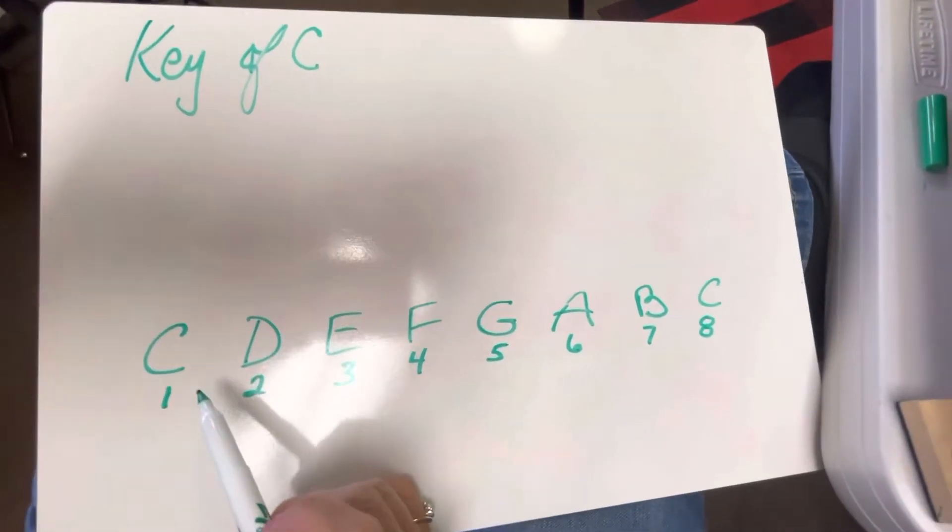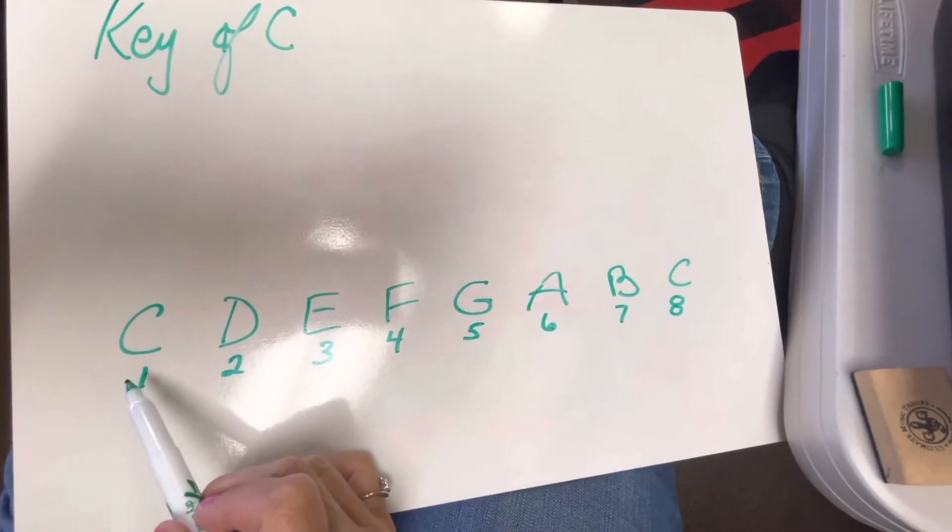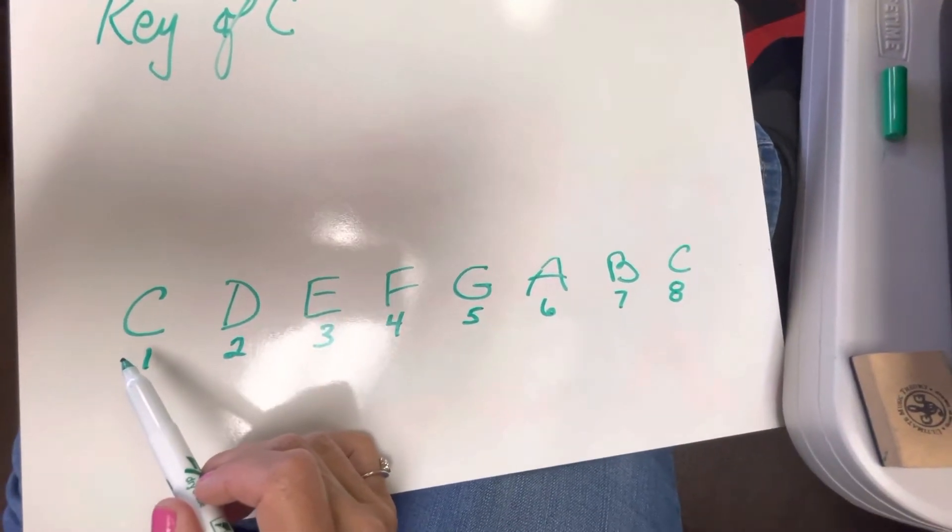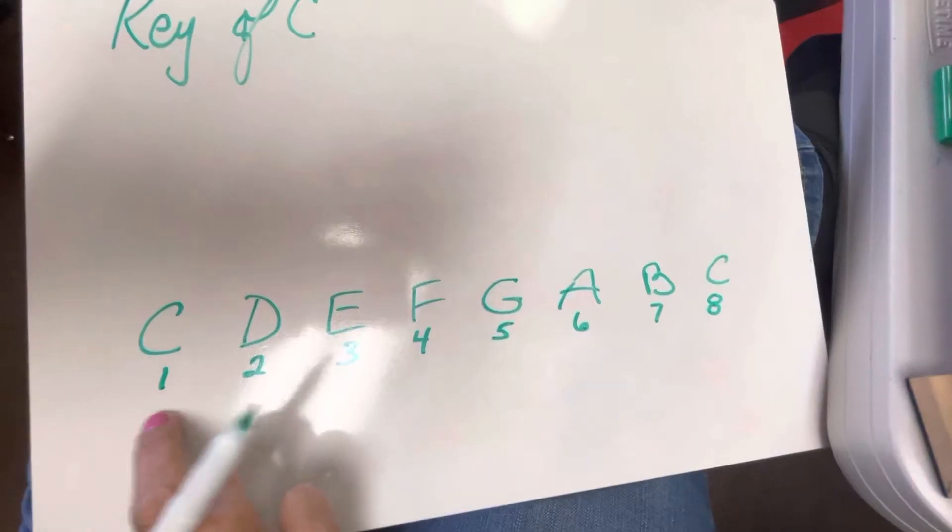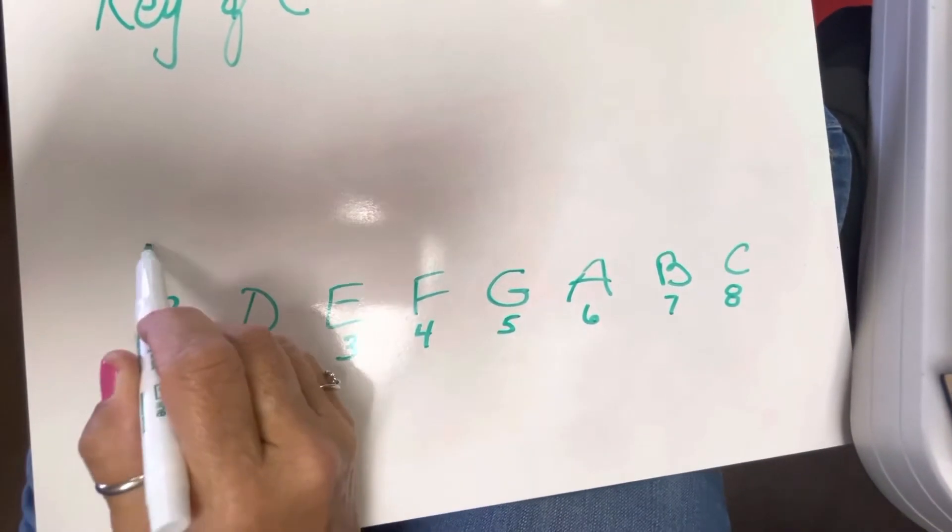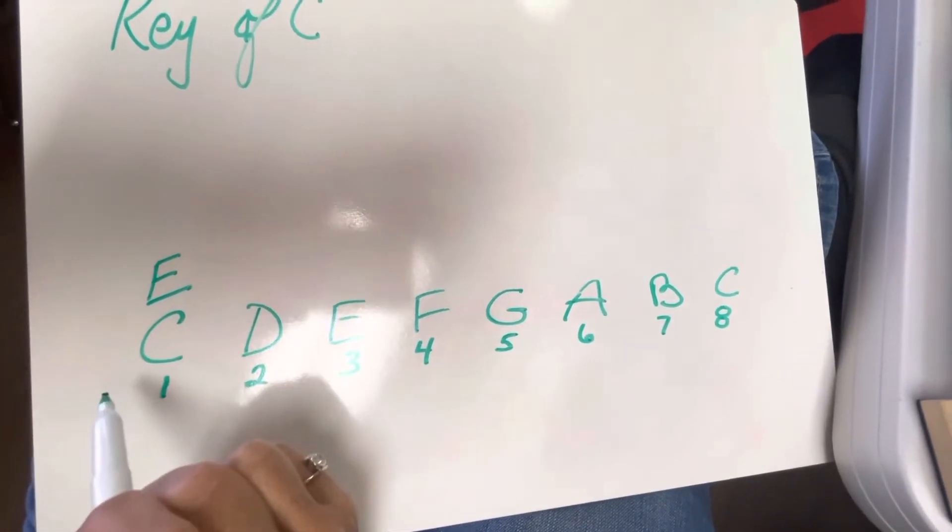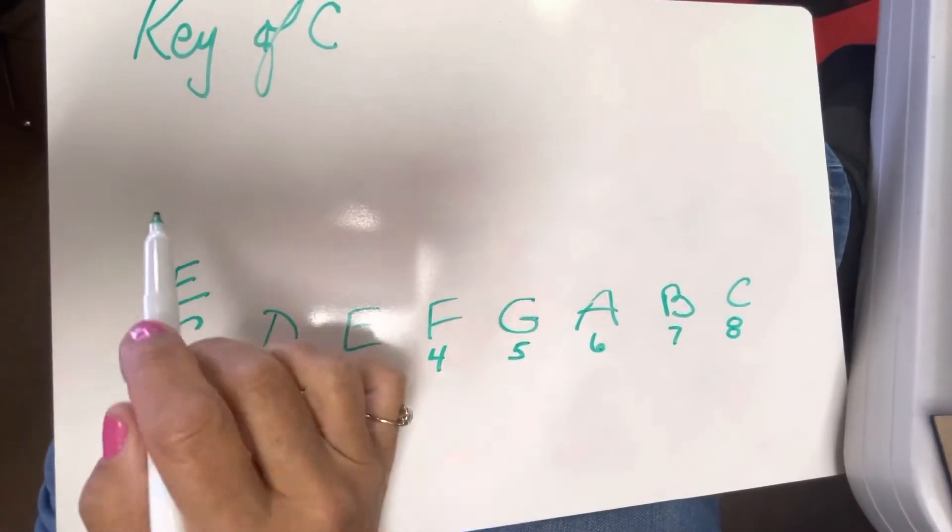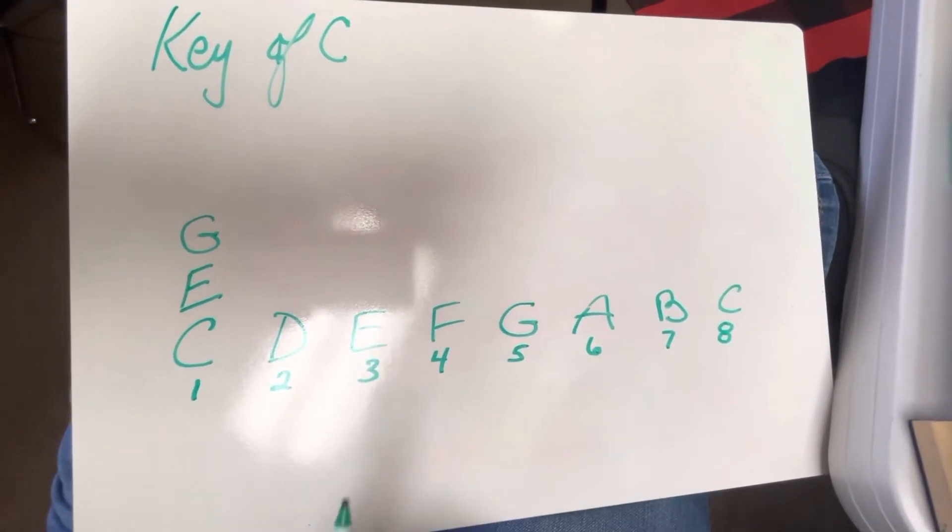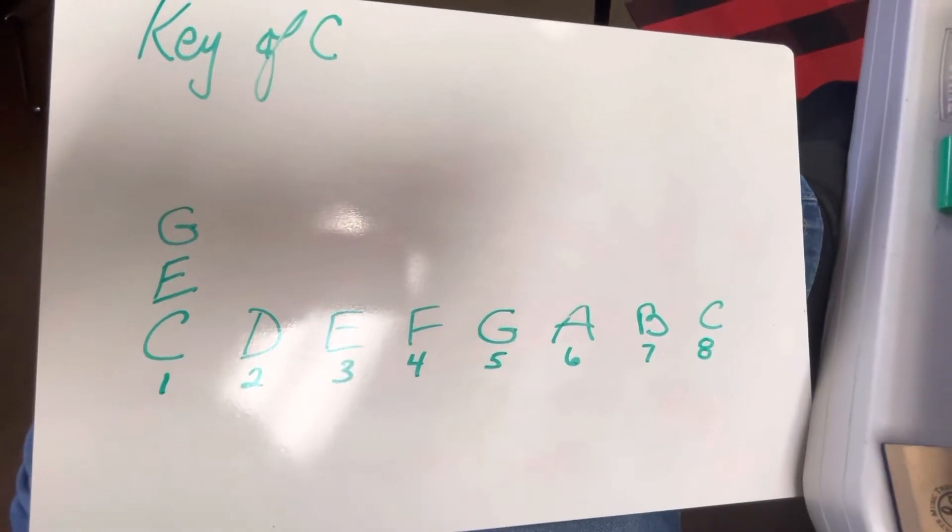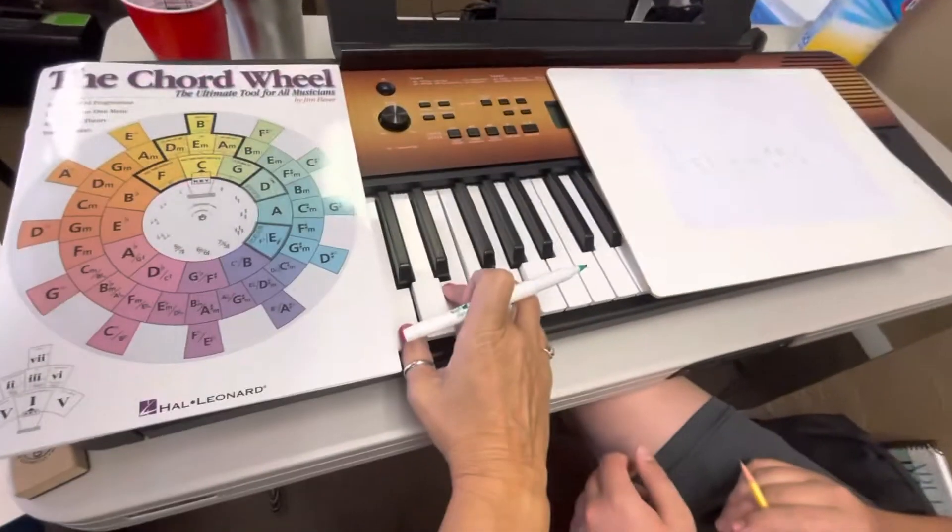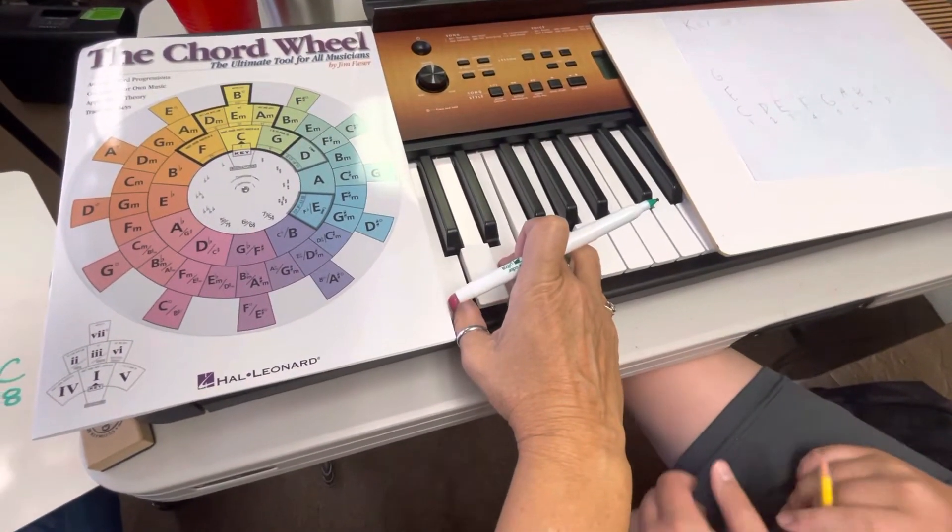So how do we build a C chord? What are the three letters in a C major chord? One, three, five, or what are the letters? C-E-G, right? So every other one moves up. So follow me and write your E on top. C-E-G. So if I play a C major chord, it's happy, right? Yes.